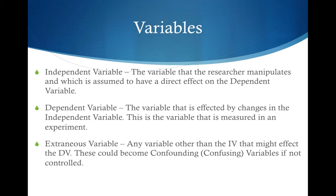Independent variable. This is the variable that the researcher manipulates and which is assumed to have a direct effect on the dependent variable. Basically, independent variables are also known as conditions in an experiment.